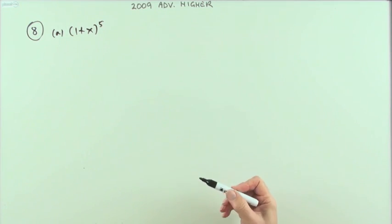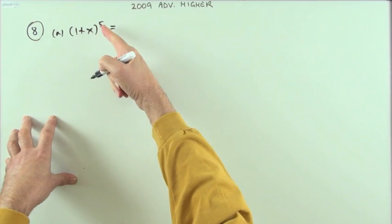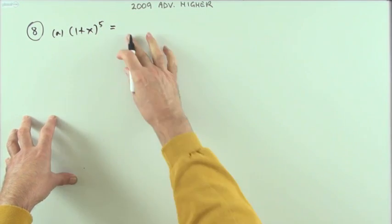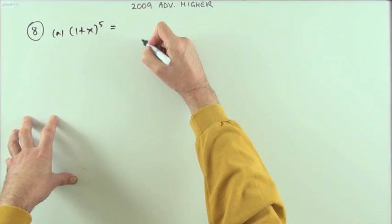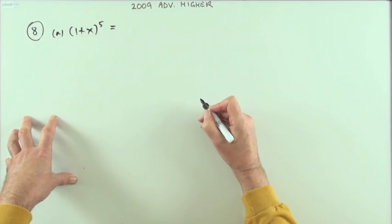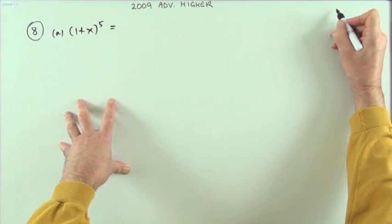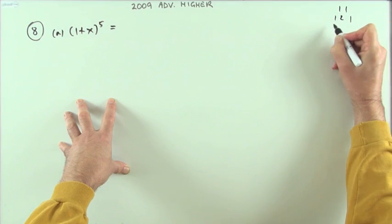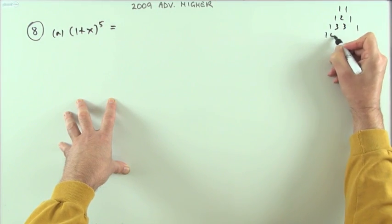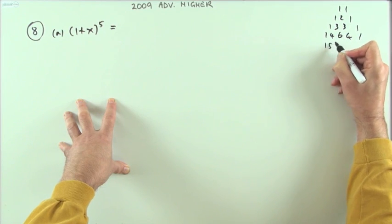Well, the first part - if you can remember your binomial coefficients, battle it off. You don't really want to be working out the combinations. If you don't remember them, just batter out Pascal's triangle: 1, 1; 1, 2, 1; 1, 3, 3, 1; 1, 4, 6, 4, 1.